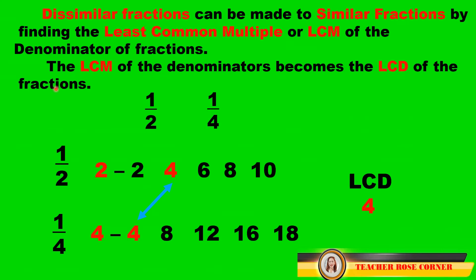Let us have this example: 1 half and 1 fourth. We are going to list the multiples of 2: we have 2, 4, 6, 8, and 10. And then the multiples of 4: we have 4, 8, 12, 16, and 18. The least common multiple is 4. That 4 is the LCM, and we are going to use 4 to rename the fraction.